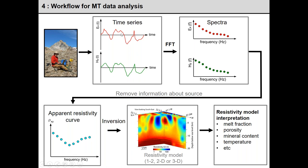Processing steps after measuring time series: first, apply a Fourier transform to get electric and magnetic fields as a function of frequency. Then divide the electric field by the magnetic field to calculate apparent resistivity — this removes source information from space physics or lightning and focuses on the part of the EM field sensitive to Earth's structure. After doing this at perhaps 100 stations, we run an inversion: taking data and making a model of the Earth. MT inversion techniques exist in 1D, 2D, and 3D.